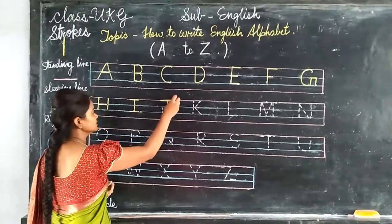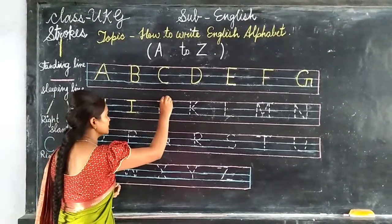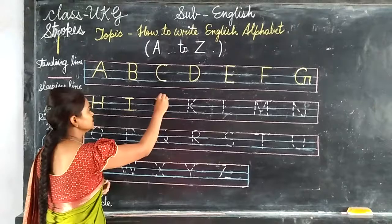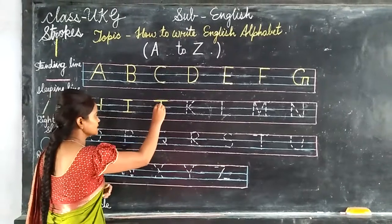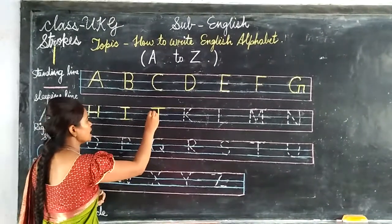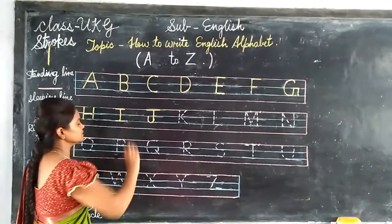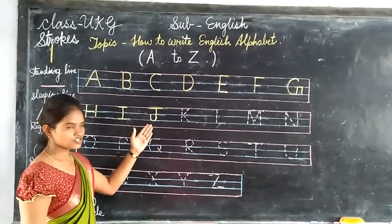Standing line, slipping line, slipping line, and upward curve. J.